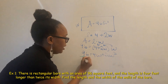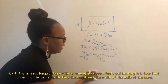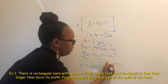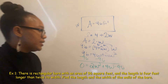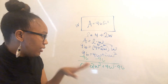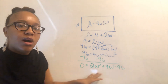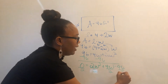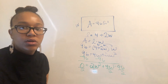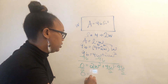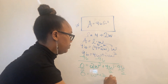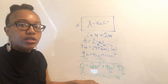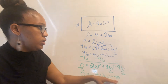Whenever you want to solve a quadratic equation, you want to get zero on one side. So we're going to subtract 96 from both sides. That gives us zero equal to two W squared plus four W minus 96. All of these terms have a two in common, so we divide everything by two — including the zero — and we end up with zero equal to W squared plus two W minus 48.